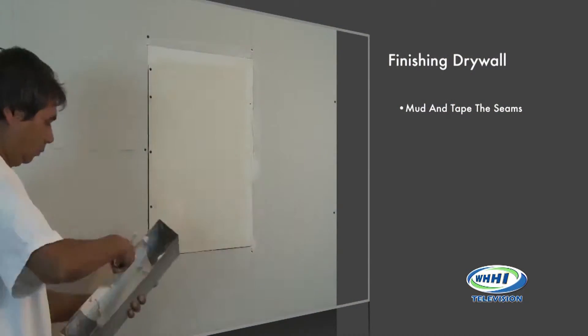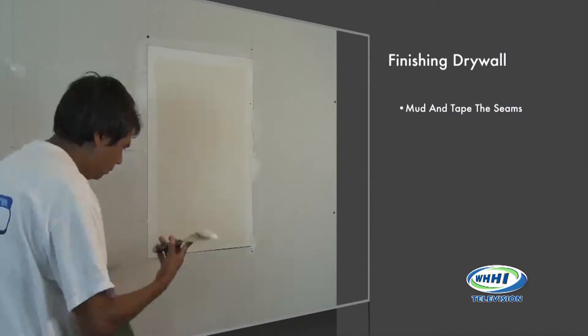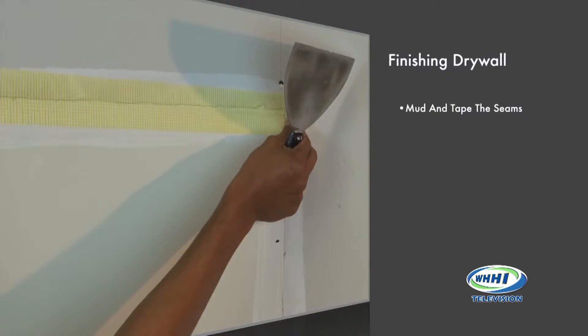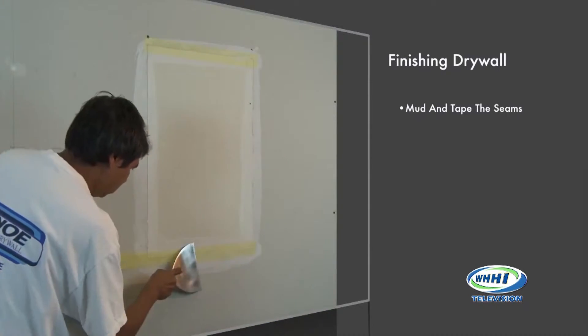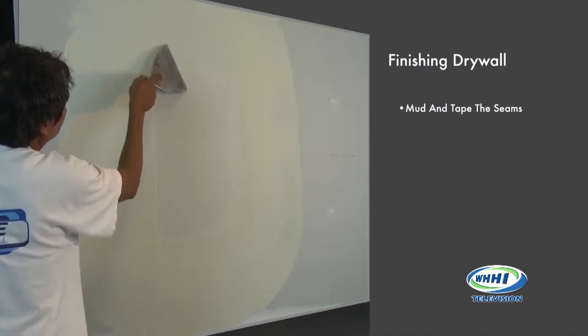He would use the usual drywall mud over the top, sand it down, and then he'd do a finish layer of drywall mud completely over the complete thing and then sand it.